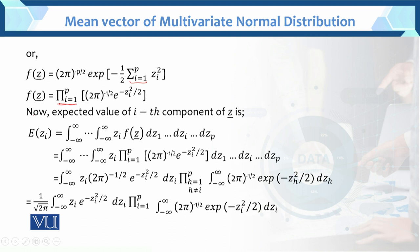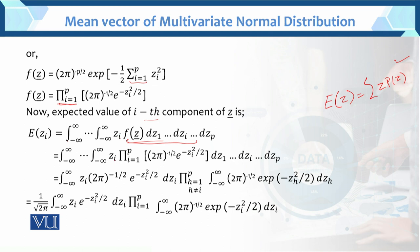Mean ke liye — expected value leni hogi. Now expected value of i-th component of Z is — hamne iski expected value le rahe hain. Expected value ke liye limit i minus infinity to infinity, up to so on, minus infinity to infinity kyunki multivariate case hai. Z_i — simple univariate mein expected value Z_i into f of Z — yeh continuous case hai. Z_i as it is, f of Z yahan pe hamne find kiya, woh f of Z hamne yahan enter kar diya — yeh hamare paas expected value of Z_i simplify ho raha hai.